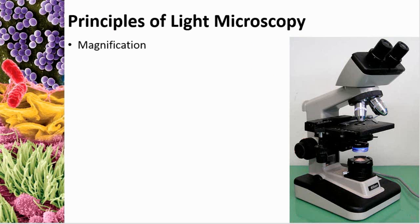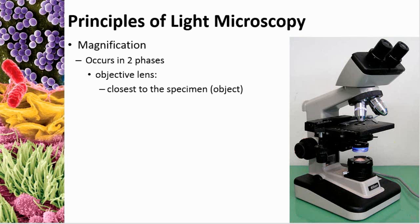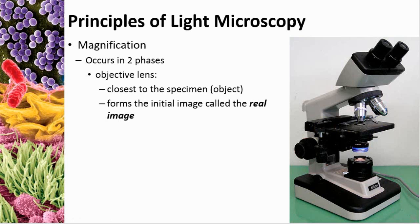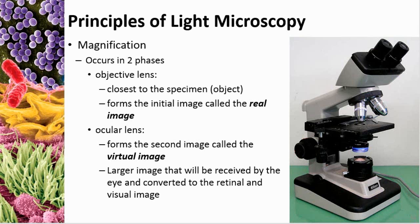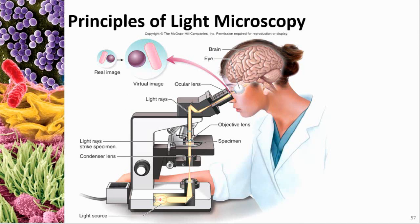A light microscope works in two phases of magnification. First is the objective lens, which is closest to the specimen. The specimen sits on the stage, and the objective lenses form the initial 'real image.' The second part is the ocular lens — the lens closest to your eye. Most modern microscopes have two ocular lenses. This forms the 'virtual image' — the larger image that actually hits your retina. Light from a bulb bounces off a mirror, is converged through a condenser lens and diaphragm that focuses it, and shoots up through the specimen. The stage can be raised and lowered to achieve correct focus.